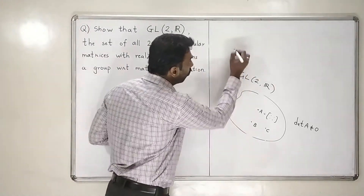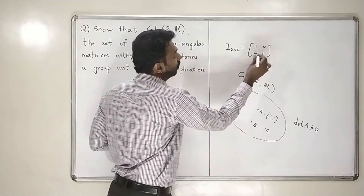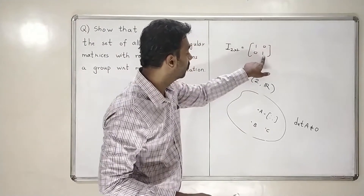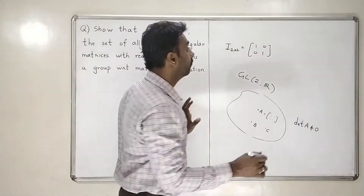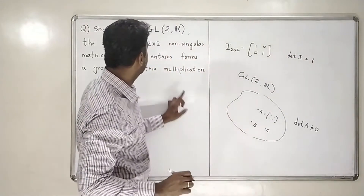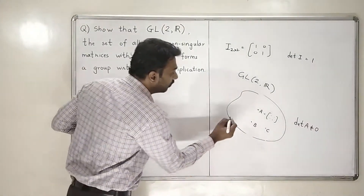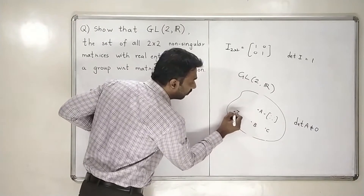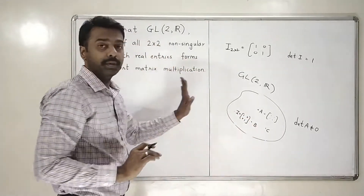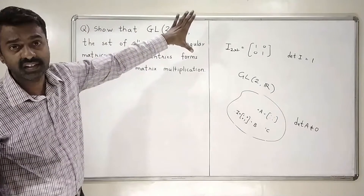Now, it is clear that if you know the identity matrix — the 2x2 identity matrix — it is [1, 0; 0, 1]. So it is a 2x2 matrix, the entries are real numbers. What is the determinant of the identity matrix? The determinant of the identity matrix is 1. So, identity matrix is clearly a 2x2 non-singular matrix with real entries. Therefore, identity matrix is an element of this set GL2R. I hope you have completely got an idea what type of matrices will go in GL2R.